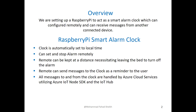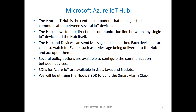All messages to and from the clock are handled by Azure Cloud Services and the Azure IoT Node SDK and the IoT Hub. The Azure IoT Hub is the central component that manages the communication between several IoT devices. The hub allows for bi-directional communication between any single IoT device and the hub itself, and the hub and devices can send messages to one another.